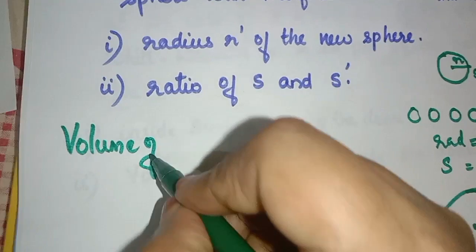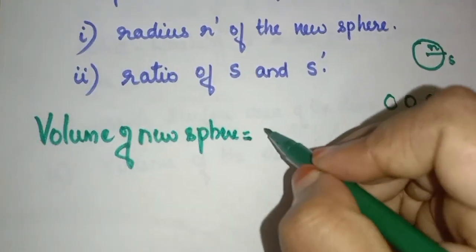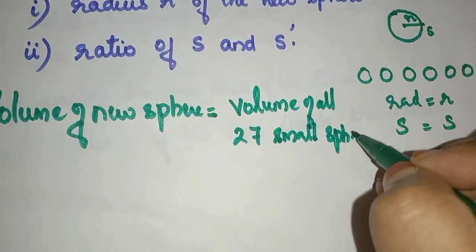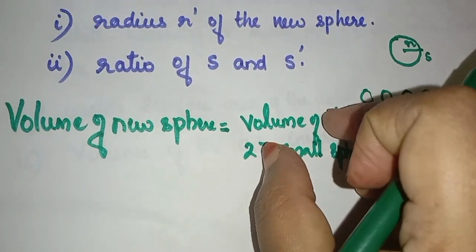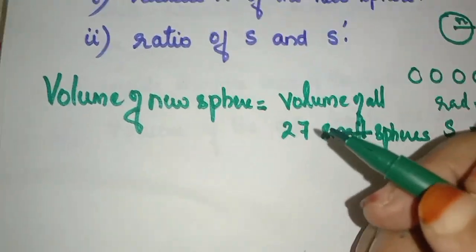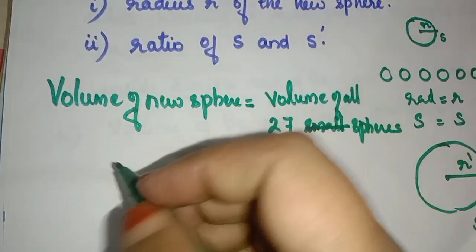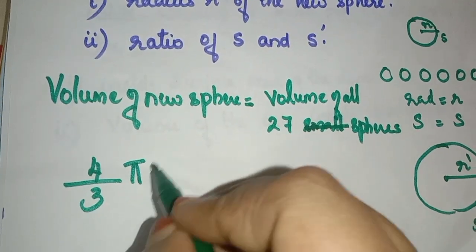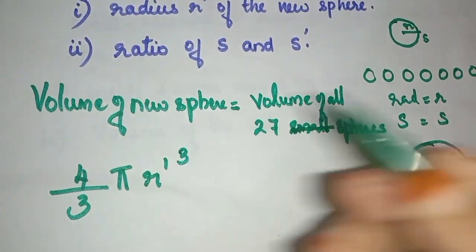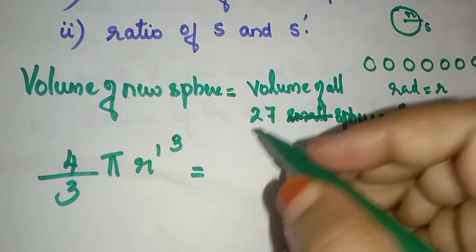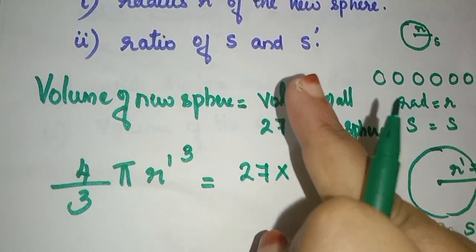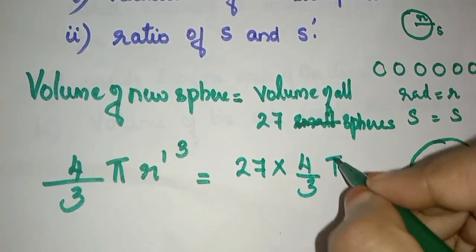Volume of the new sphere is equal to the volume of all 27 small spheres. So 4 by 3 pi R' cube is equal to 27 into 4 by 3 pi r cube.